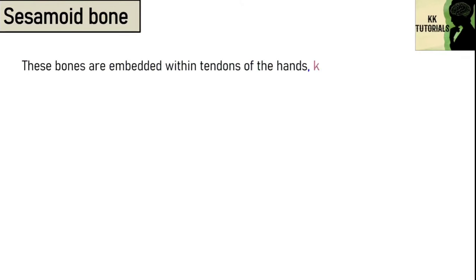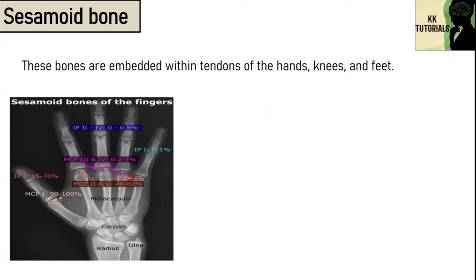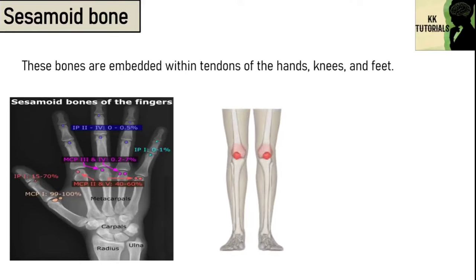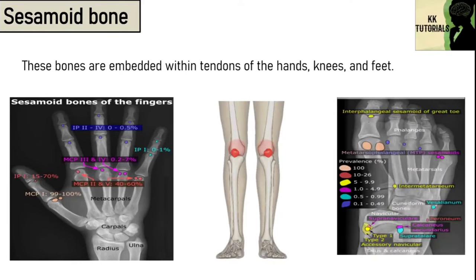The fifth type is sesamoid bone. These bones are embedded within tendons. These small round bones are commonly found in the tendons of the hands, knees and feet. Sesamoid bones function to protect tendons from stress and wear. The patella, commonly referred to as the kneecap, is an example of a sesamoid bone.